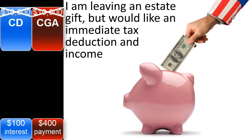For example, if a donor owns a $10,000 certificate of deposit which he has already designated a charity to receive at death, then his payments from a charitable gift annuity would be more directly comparable with his interest earned on the certificate of deposit, because in either case the charity will receive the principal at death.